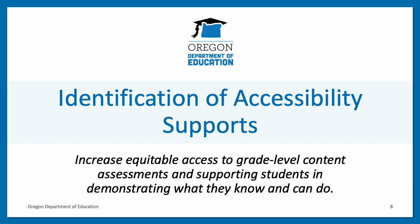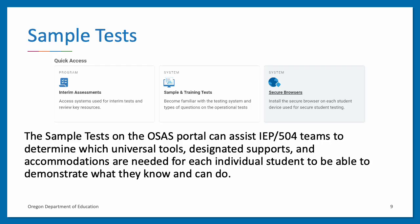The identification of whether a particular support is offered as a universal tool, designated support, or accommodation is determined independently for each assessment based on the construct that assessment is designed to measure. As part of the identification of accessibility supports process, ODE highly recommends using the sample test to familiarize TAs and students to the tests and accessibility supports.